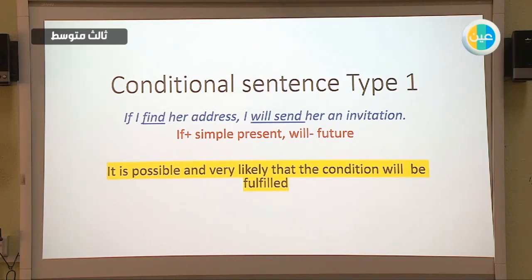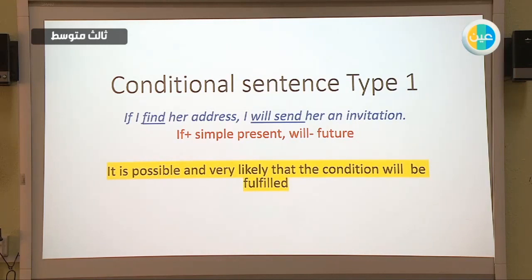When do we use the conditional sentence type 1? To talk about something that is possible and very likely to happen — that the condition will be fulfilled and happen. So it's used to talk about something possible.